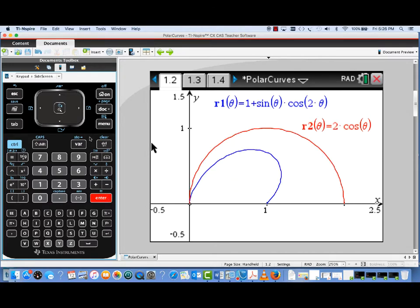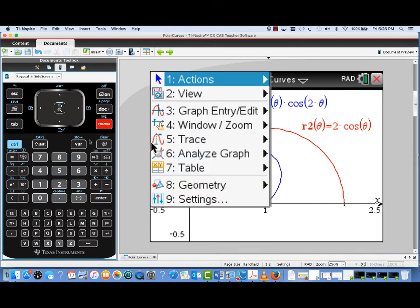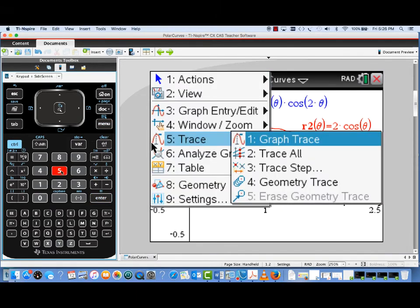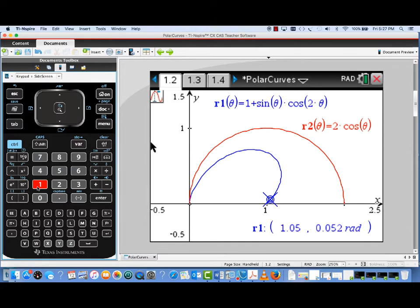And now I'm going to go back to the trace from the menu. And then we're going to trace each of these two curves. So I've turned on the graph trace, and now the increment on the trace is matching up with what we used for plotting.